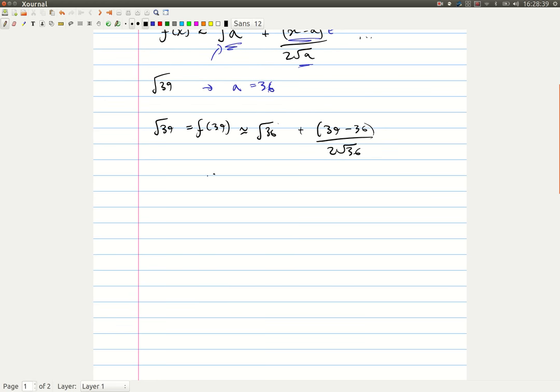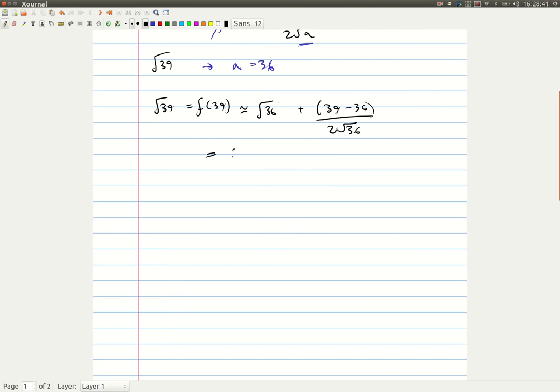And it's kind of all coming together now. So if we try and calculate this, we get 6 plus 3 over 2 times 6 equals 6 plus 1 over 4 equals 6.25.